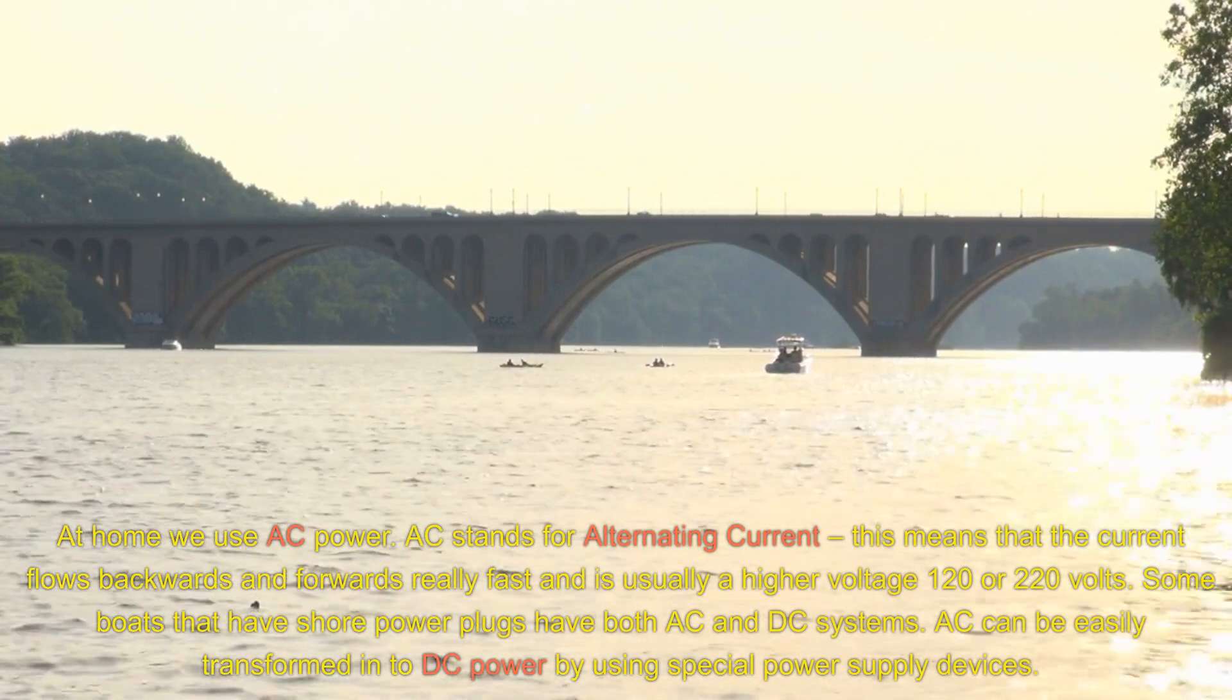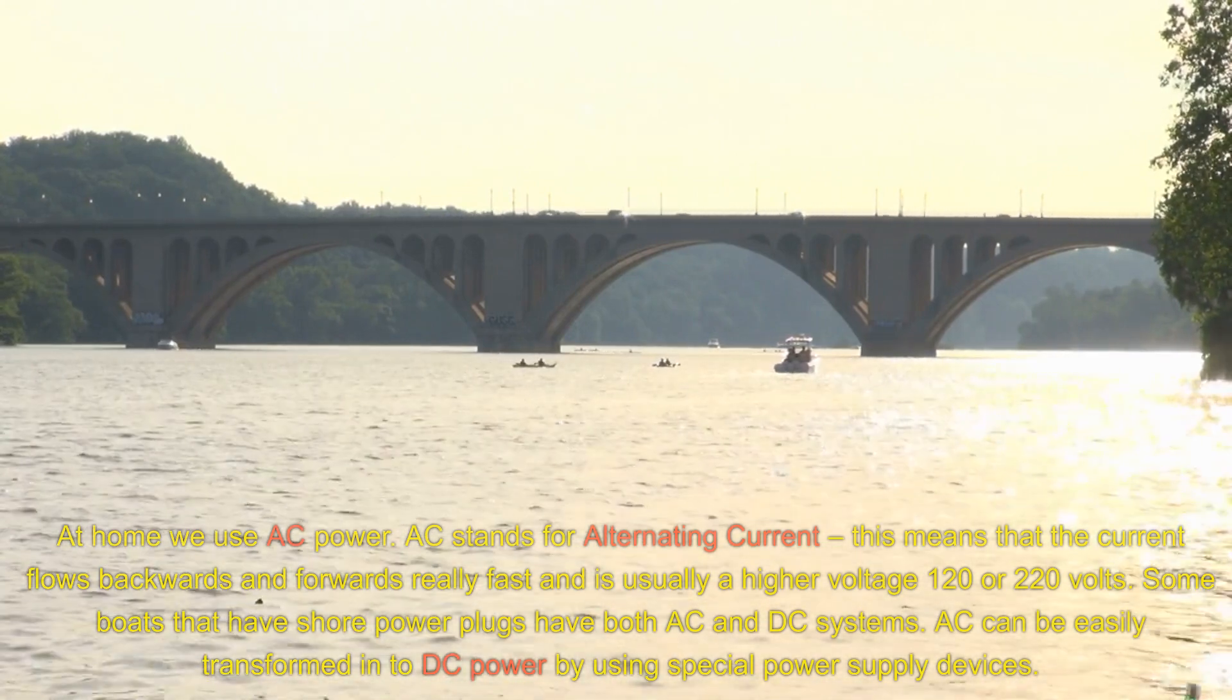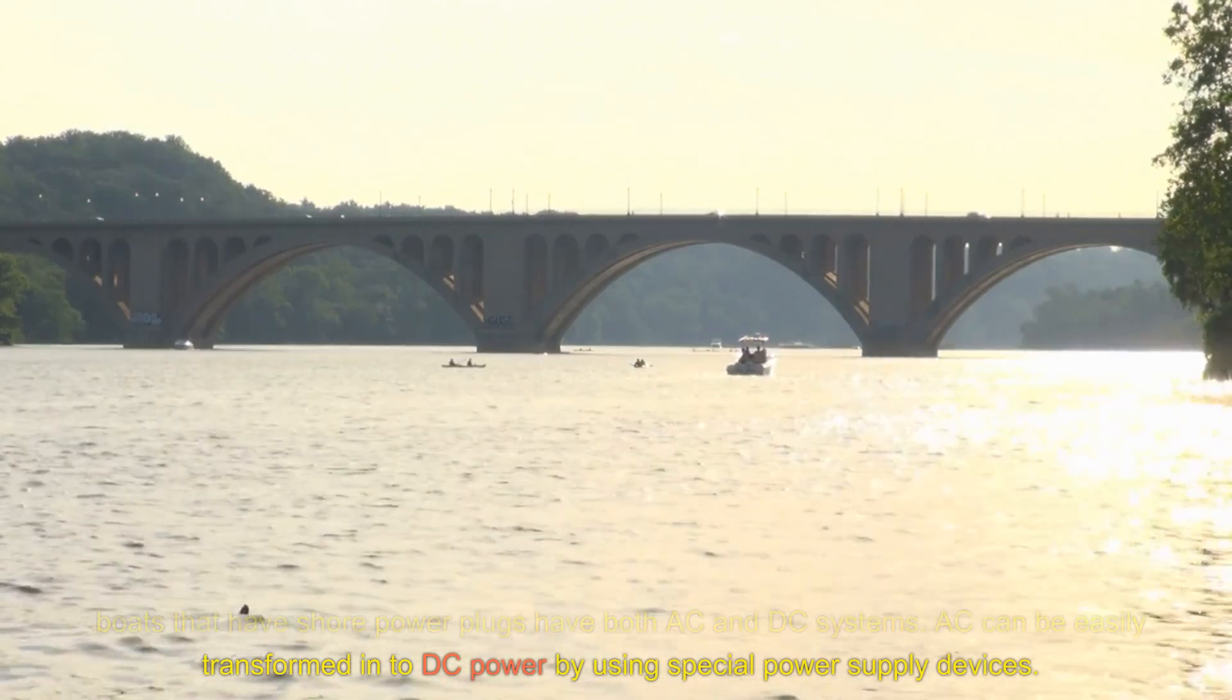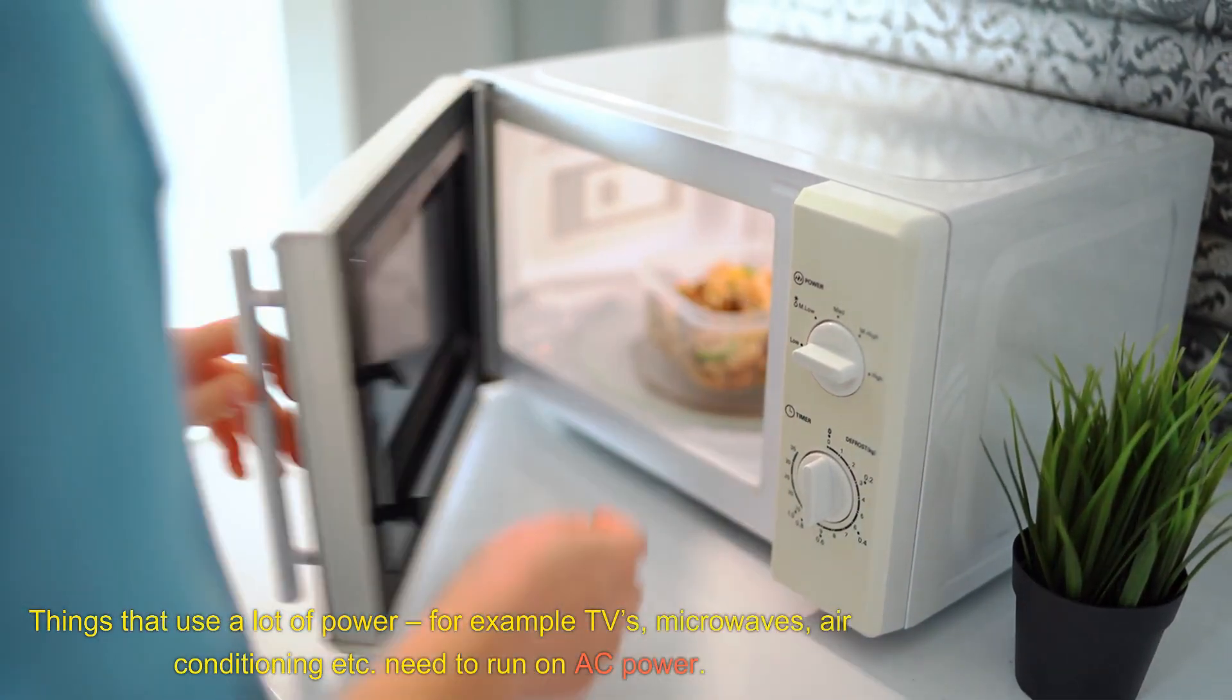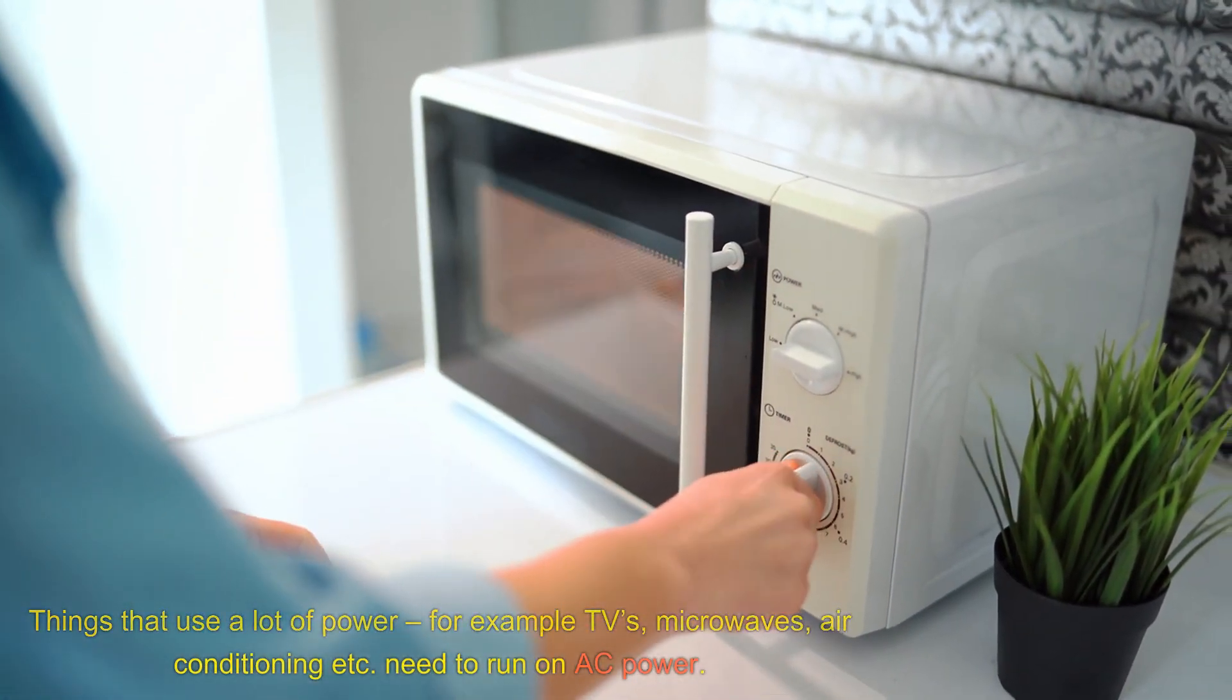AC can be easily transformed into DC power by using special power supply devices. Things that use a lot of power, for example TVs, microwaves, air conditioning, etc., need to run on AC power.